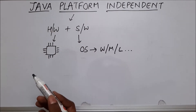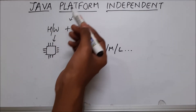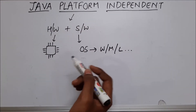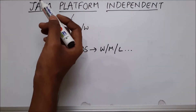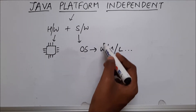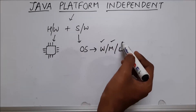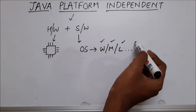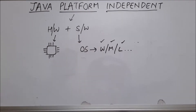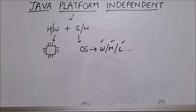We are claiming that Java can run on any platform, meaning any Java program can run in Windows, Mac, Linux, and any other OS available. So let's see how Java can do this. Before that, let me show you what other programming languages used to behave like before Java.